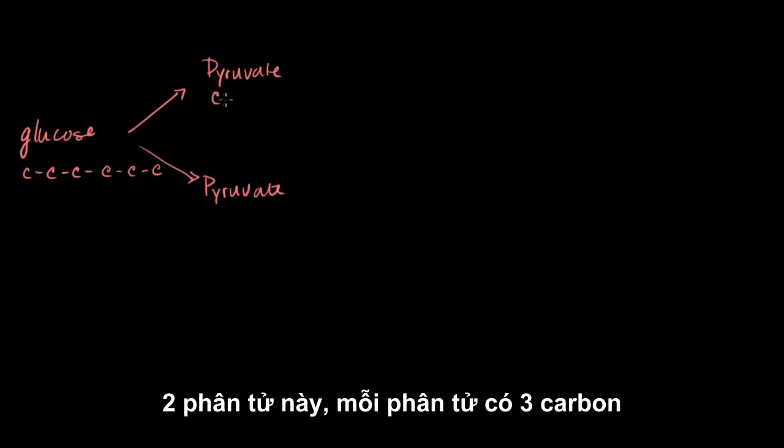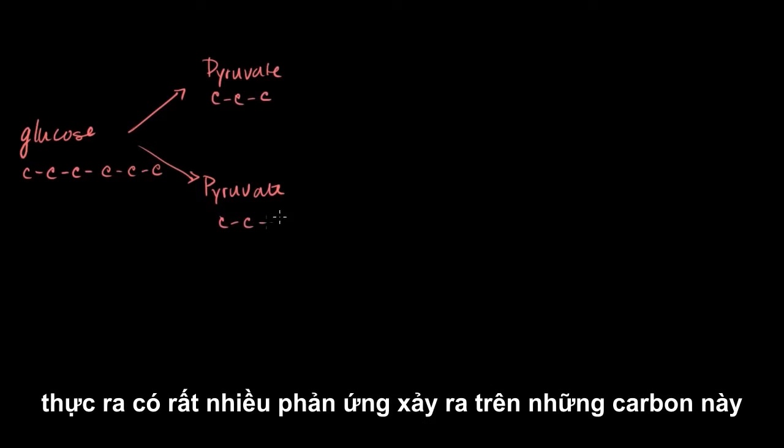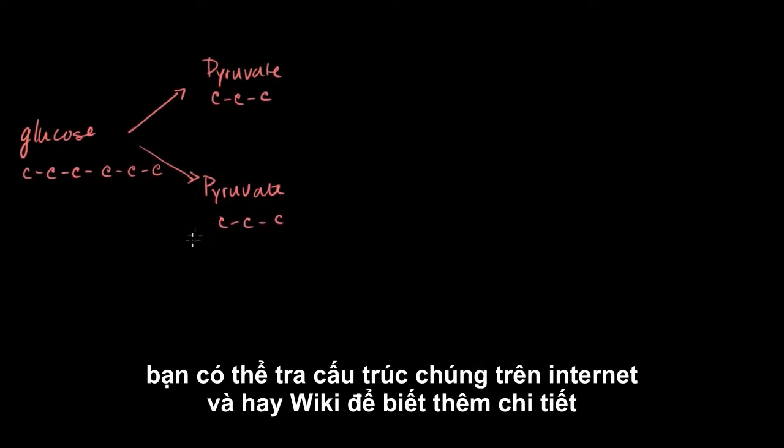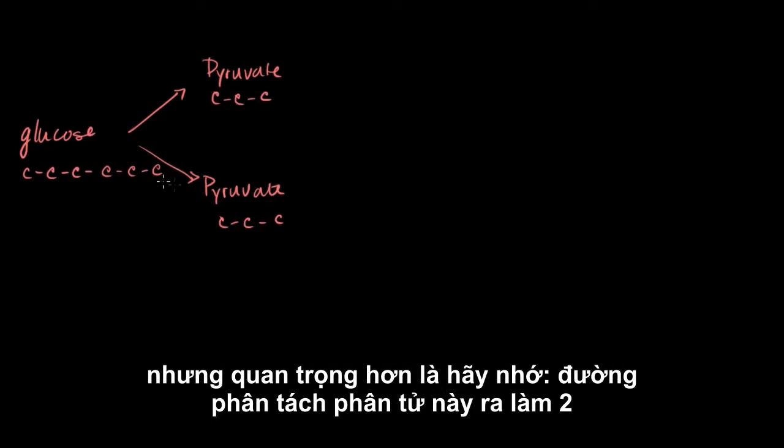And these are three carbon molecules. There's obviously a lot of other stuff going on in the carbons you saw in the past, and you can look up their chemical structures on the internet or Wikipedia and see them in detail. But this is kind of the important thing, is that it was lysed, it was cut in half, and this is what happened in glycolysis.